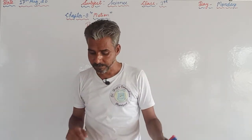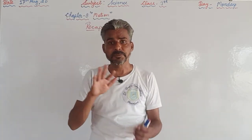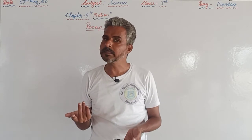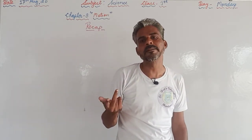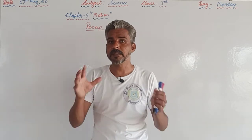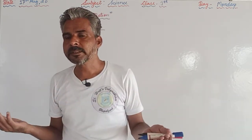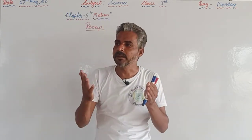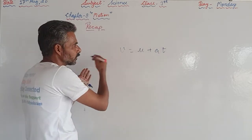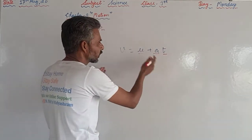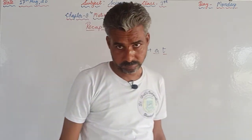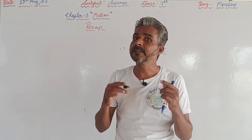We discussed two types of graphs: the distance-time (d-t) graph and the velocity-time (v-t) graph. We also covered three equations of motion: v = u + at, s = ut + ½at², and v² - u² = 2as. For solving numericals, first read the question, note down the given information, then select the appropriate equation. For example, in v = u + at, if any three of the four terms are given, the fourth can be calculated.